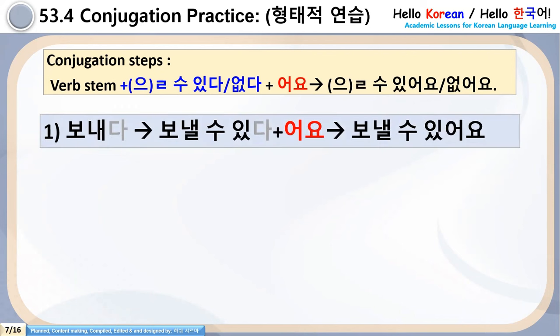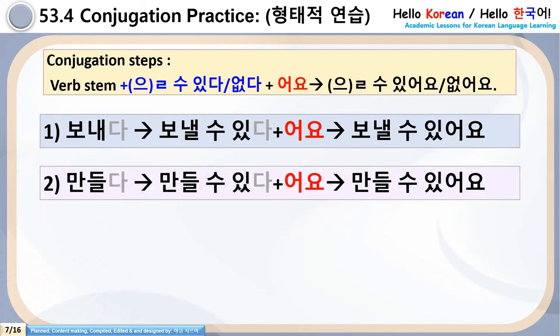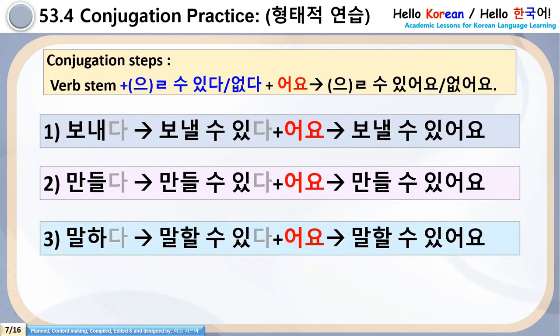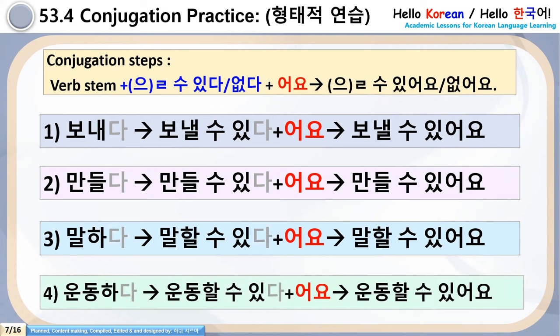Let's go through conjugation examples. Number 1: Khoneda + Khalsu Itta + Ayo = Phanilsu Issa Ayo. Number 2: Mandalda + Khalsu Itta + Ayo = Khalsu Issa Ayo. Number 3: Khalsu Itta + Ayo = Khalsu Issa Ayo. Number 4: Undong Hada + Khalsu Itta + Ayo = Khalsu Issa Ayo. I hope these conjugation steps are clear to everyone.